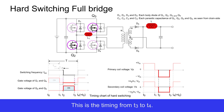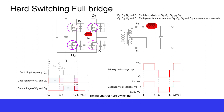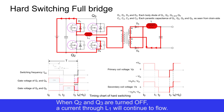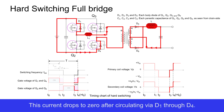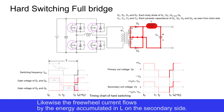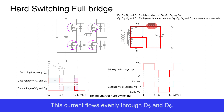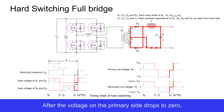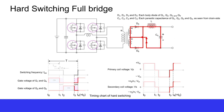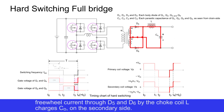This is the timing from T3 to T4. Q2 and Q3 are turned off. When Q2 and Q3 are turned off, a current through L1 will continue to flow. This current drops to zero after circulating via D1 through D4. Likewise, freewheel current flows by the energy accumulated in L on the secondary side. This current flows evenly through D5 and D6. After the voltage on the primary side drops to zero, freewheel current through D5 and D6 by the choke coil L charges CO on the secondary side.